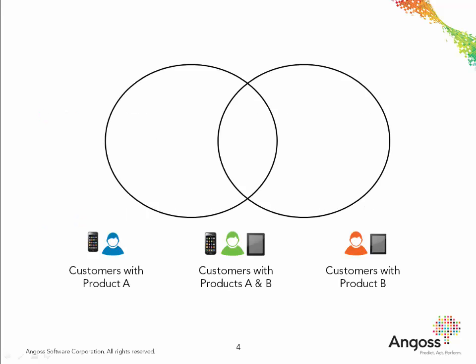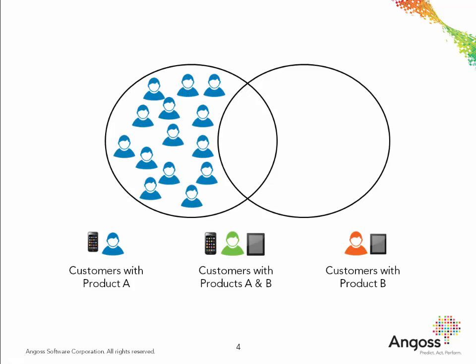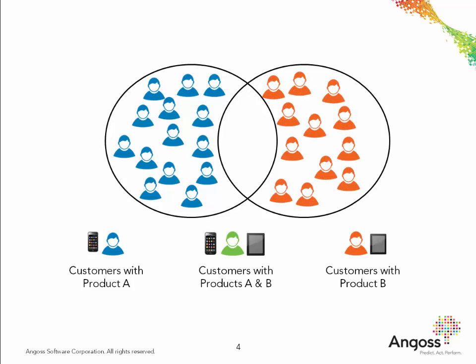In these models, the target group is defined by customers who already have other products or multiples of the same product. For example, here are two groups of customers. The blue segment represents customers who have product A, and the orange segment represents customers who have product B. The intersection of these two, shown in green, represents customers who have both products A and B.